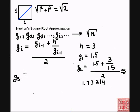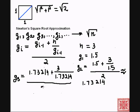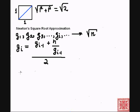Then the third guess, g3, is going to be equal to our second guess, which is 1.73214, plus n, which is 3, over our previous guess, 1.73214, and then divided by 2. That's going to be our third guess, and so on and so forth.